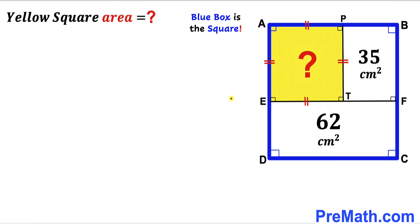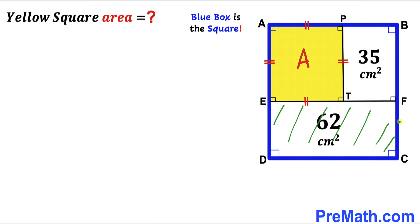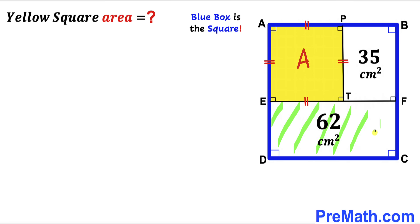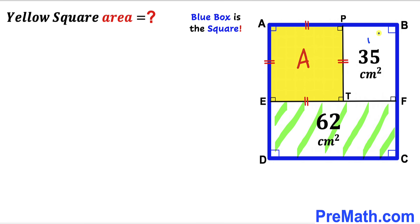Let's get started. Since we are interested in calculating the area of the yellow shaded square, I'm going to label that area as uppercase A. Now let's focus on the larger rectangle EFCD — we'll give it a green color and call it the green rectangle.